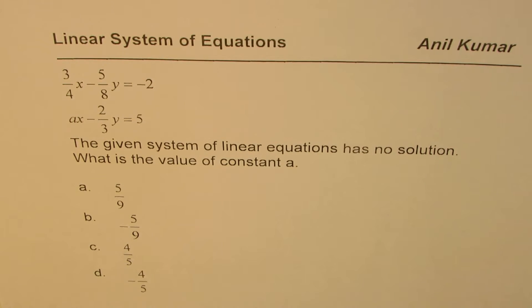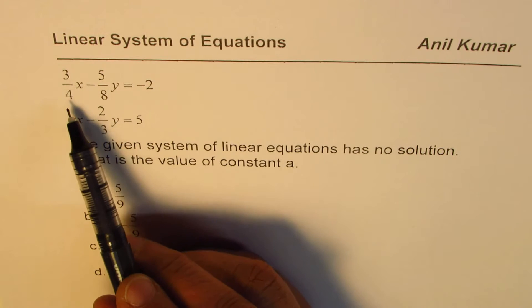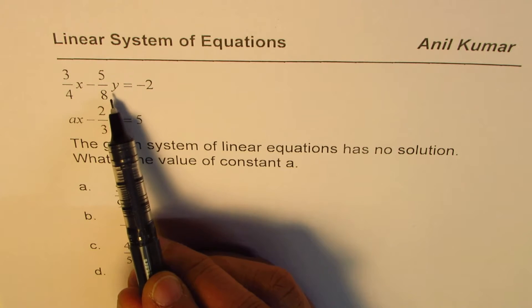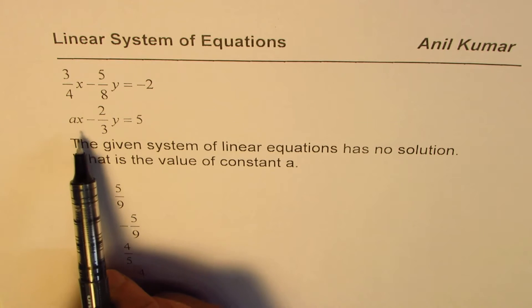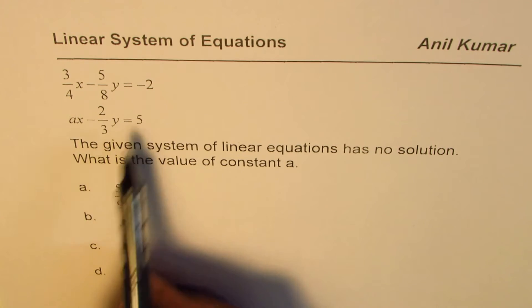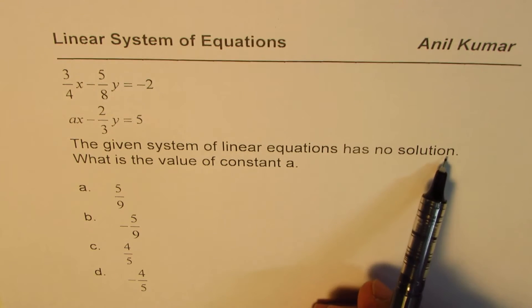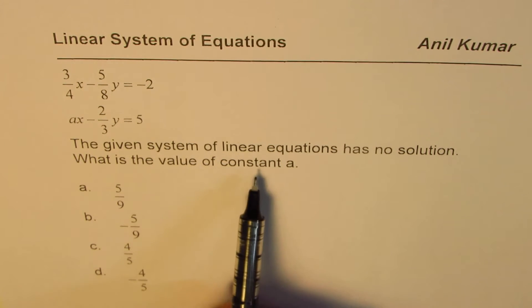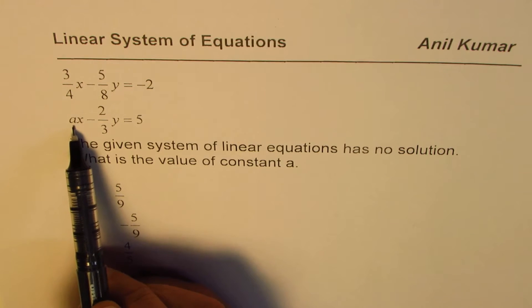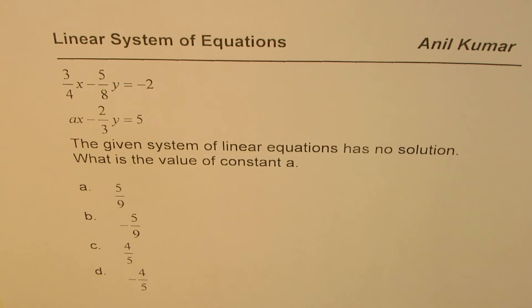I'm Anil Kumar sharing with you a multiple choice question on linear systems. You could expect these type of questions in new SAT test paper also. We are given the equation 3 over 4x minus 5 over 8y equals to minus 2, and ax minus 2 over 3y equals to 5. The given system of linear equations has no solution. What is the value of constant A? We need to find the value of A so that they have no solution.